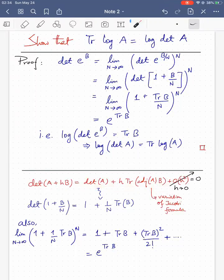Now, note that in this case, A is just 1. So we have determinant 1, and then we have h equal to 1 by N. So we have 1 by N, and then we have trace of adjoint of A is 1, so trace of B. So we see that determinant of 1 plus B by N is equal to 1 plus 1 by N trace B.